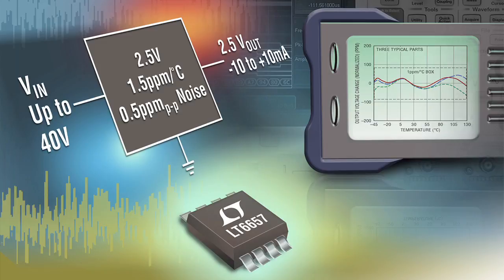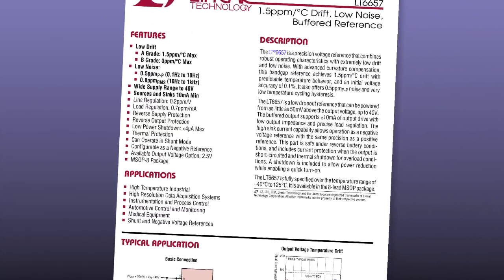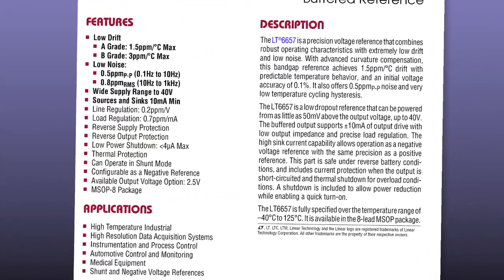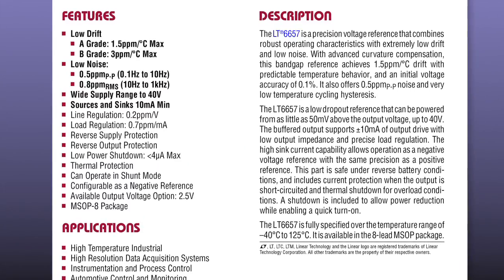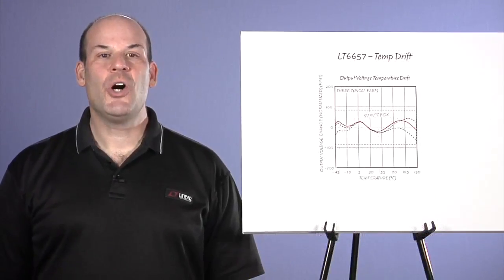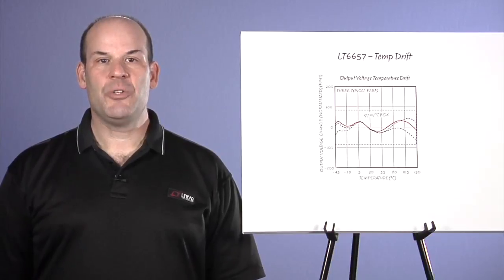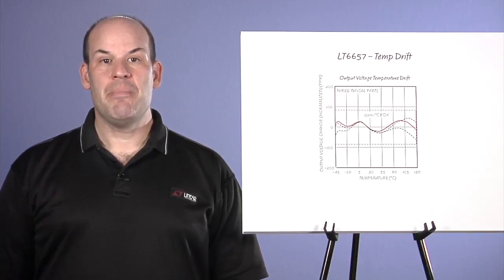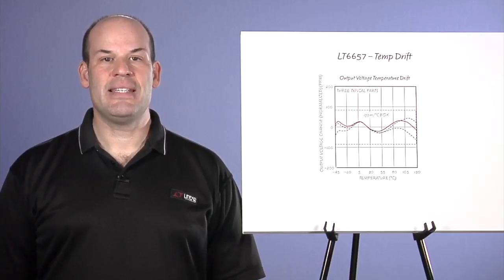Of all available voltage reference types, bandgap voltage references have long been the best choice for a combination of features and performance. However, they have not always provided the best performance compared with buried zener references. Alternatively, the bandgap architecture has made it possible to design references with many useful features including low dropout, wide temperature range, low power, small size, wide operating range, and wide load current capability. These features have given rise to a host of precision LDO regulators as well as precision voltage references.